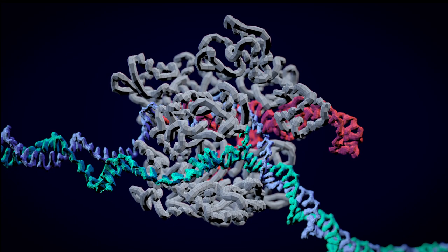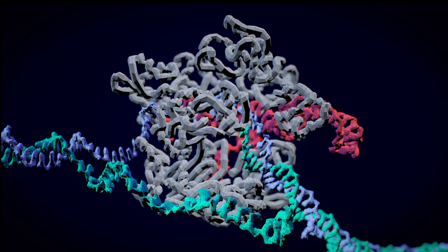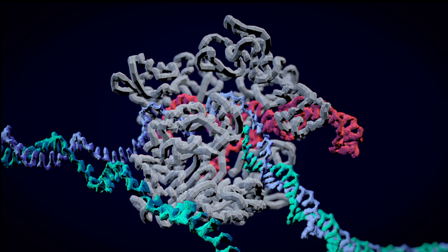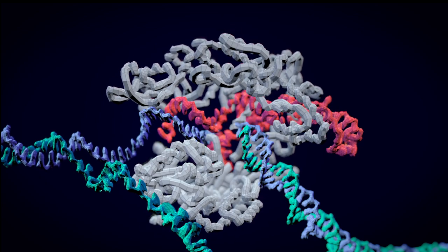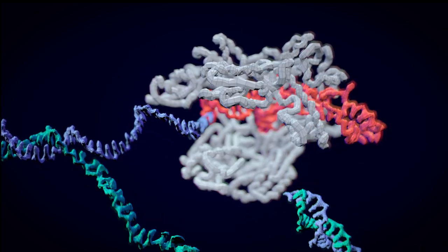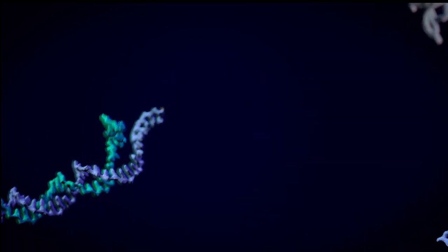When everything is bound together in the right position, the two nuclease domains in Cas9 can cut the DNA in both the non-complementary strand and the complementary strand. You are then left with a double strand break in the DNA exactly where you want it to be, and depending on what kind of result you are after you can then do three things to fix that DNA.